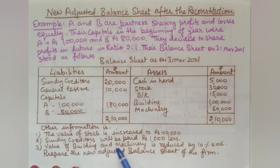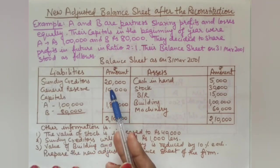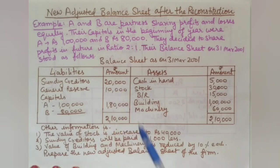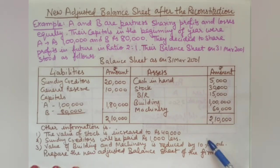Sundry creditors will be paid 1,000 rupees less, meaning we save 1,000 rupees — this is a gain and is recorded on the credit side of revaluation. So creditors are now 19,000 instead of 20,000. Then the value of building and machinery is reduced by 10%. Building was 1,00,000 — 10% depreciation is 10,000 rupees — so building is now 90,000.